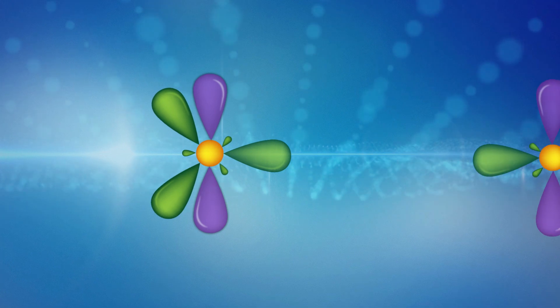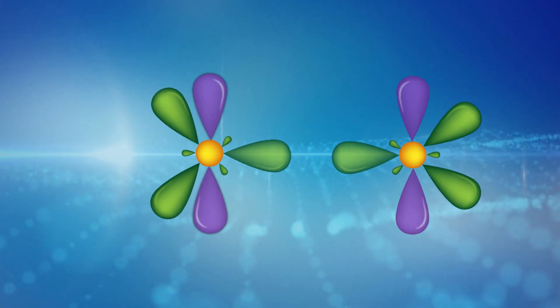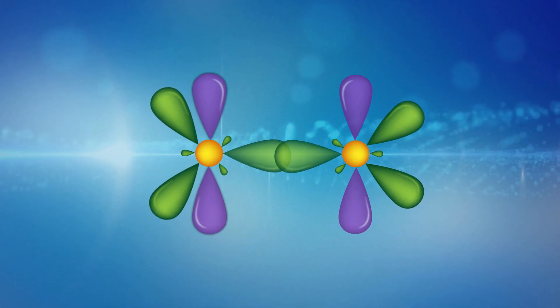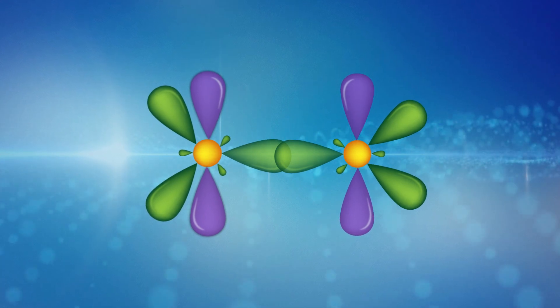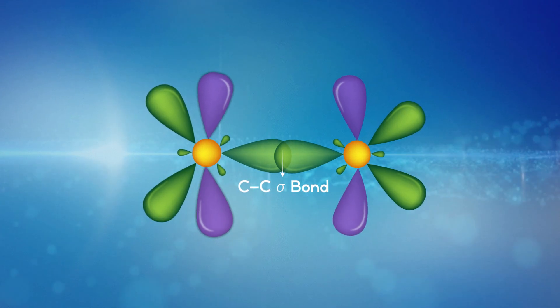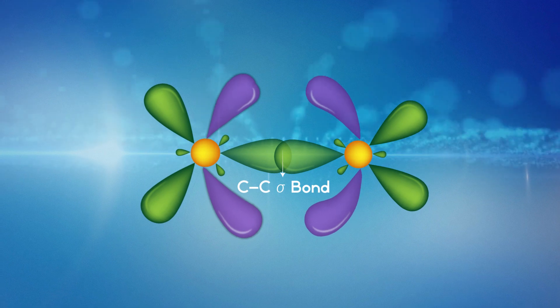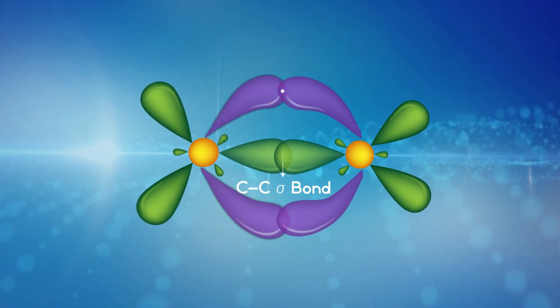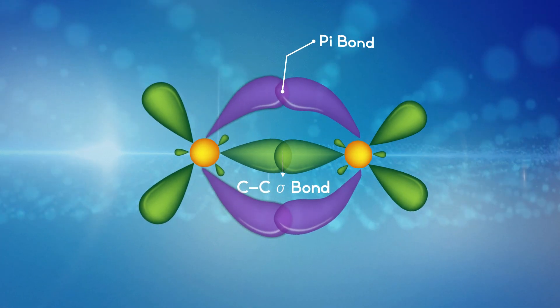Now consider another hybridized carbon atom and allow them to join. When they join, sp2 hybrid orbitals overlap and form a carbon-carbon sigma bond. The unhybridized orbitals overlap, resulting in the formation of a pi bond between the two carbon atoms.